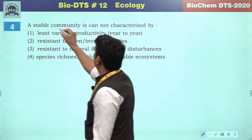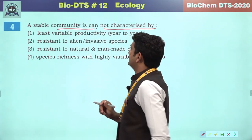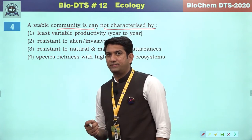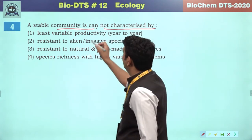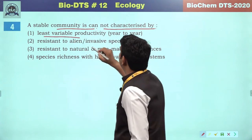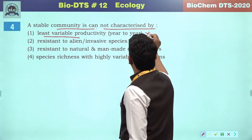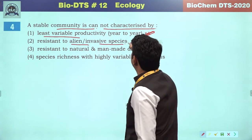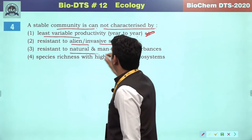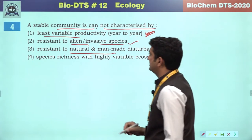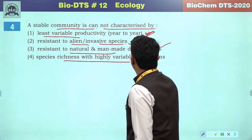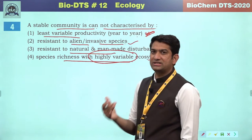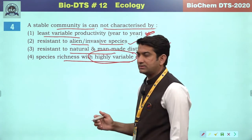A stable community cannot be characterized by highly variable ecosystems. The characteristic features of a stable community include least variable productivity year to year, resistance to alien and invasive species, and resistance to natural or man-made disturbance. Species richness with highly variable ecosystems is incorrect — it should be less variable and stable. So the correct answer will be option 4.